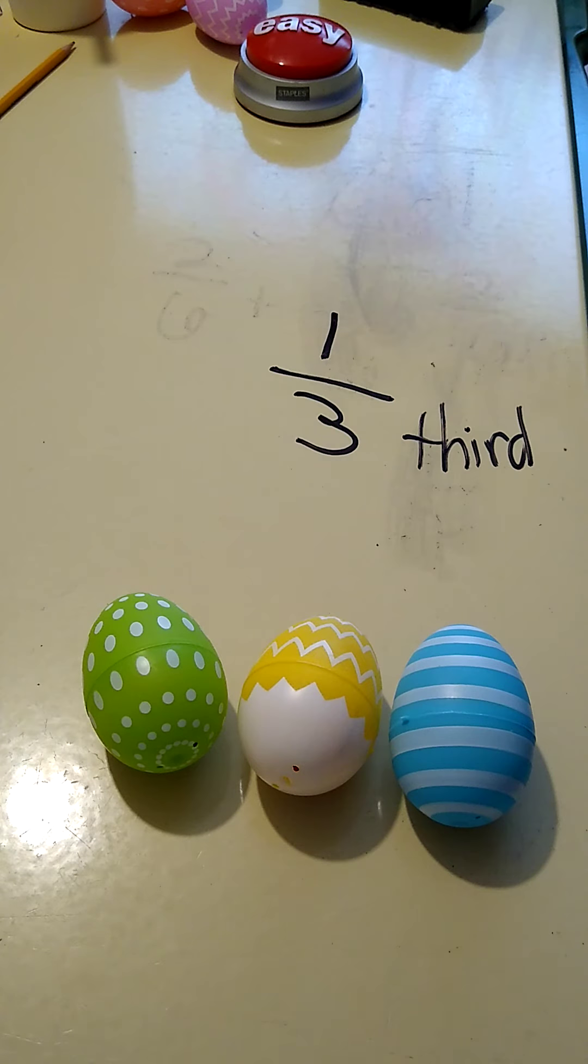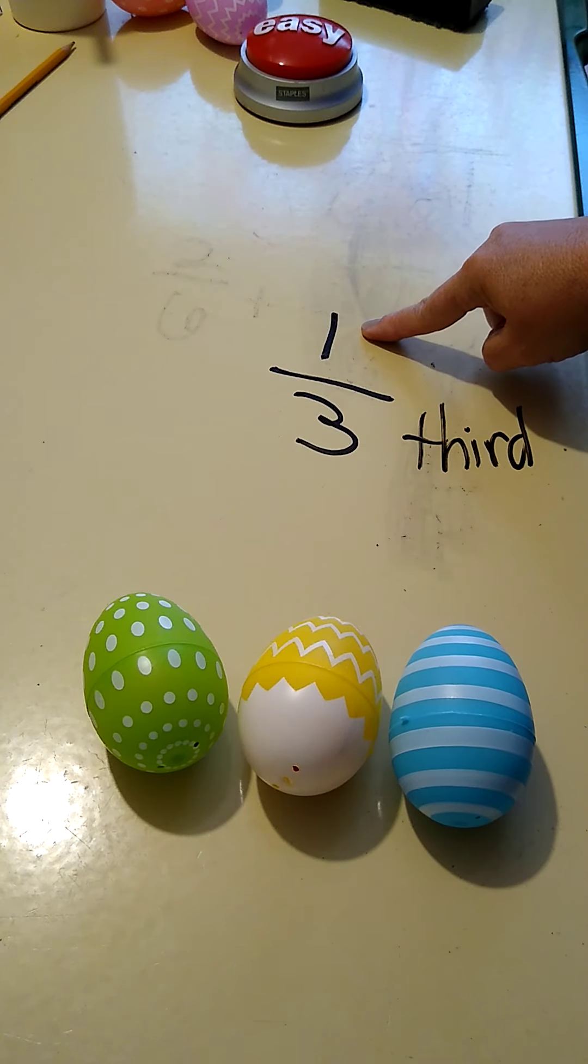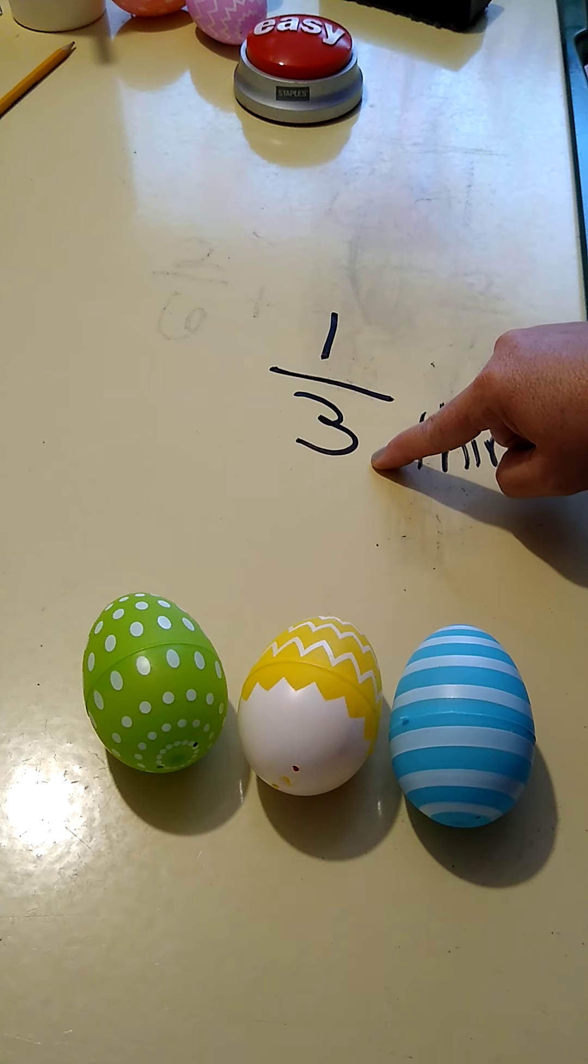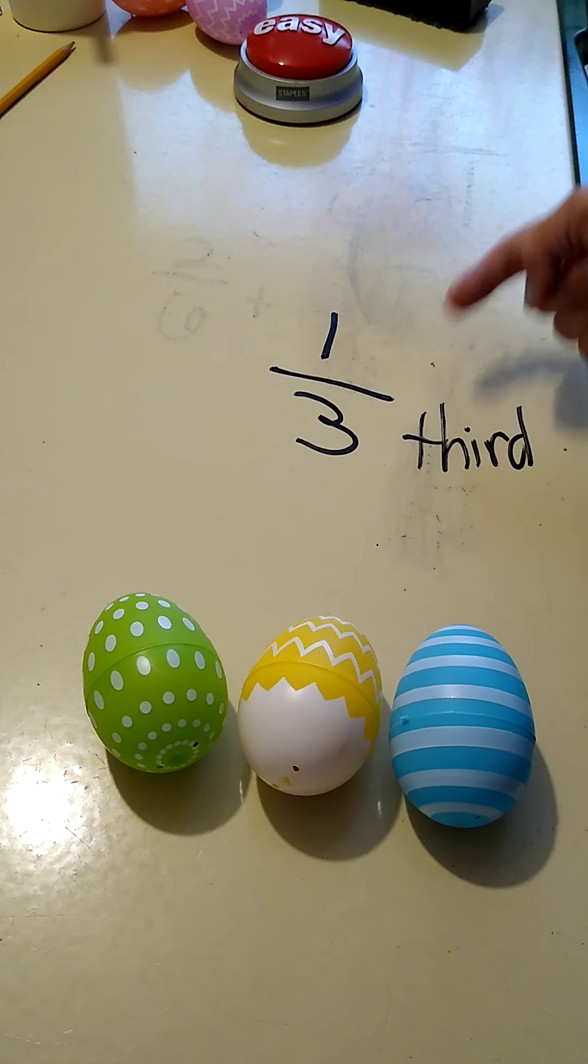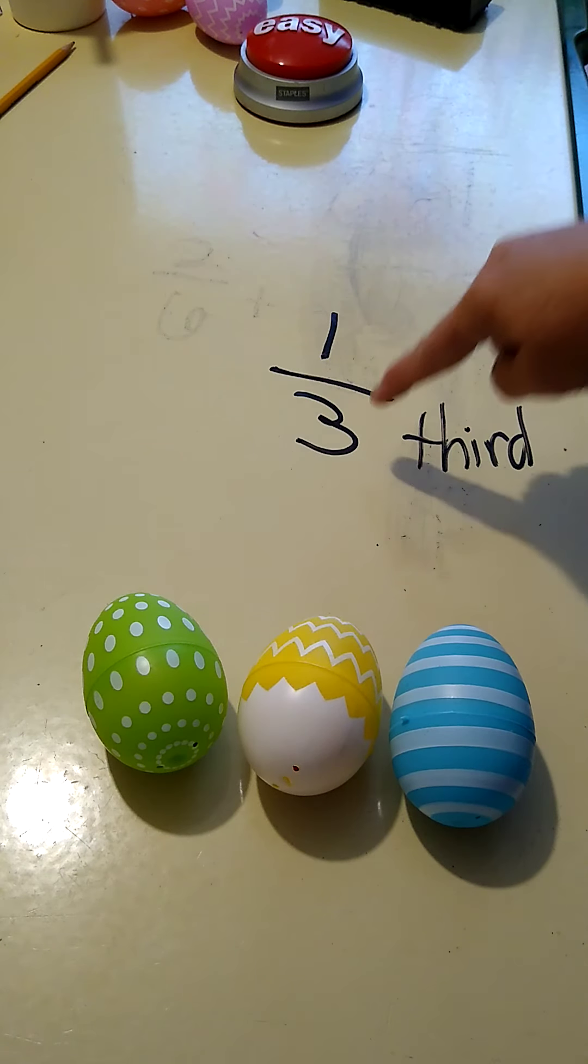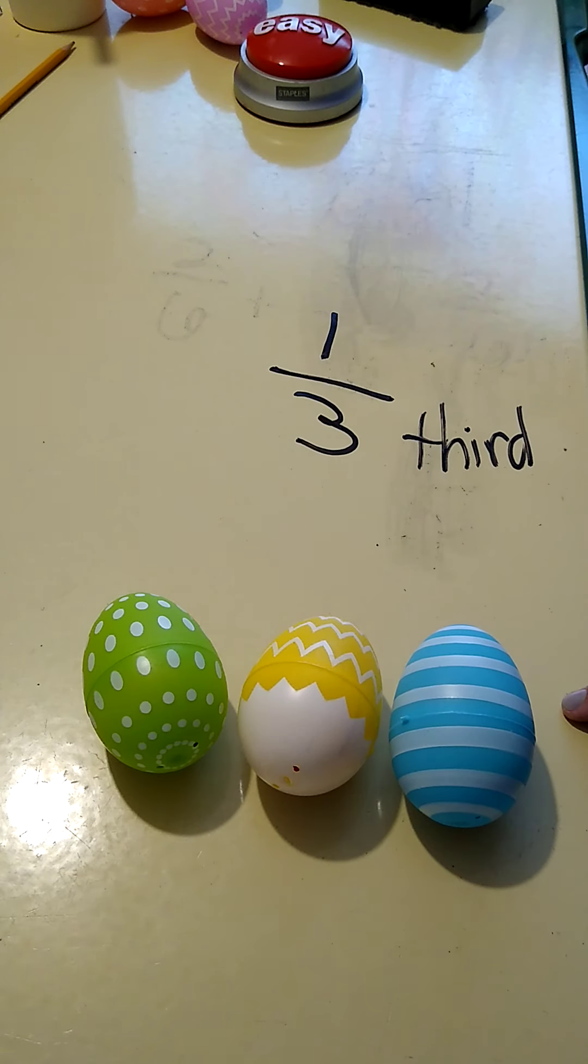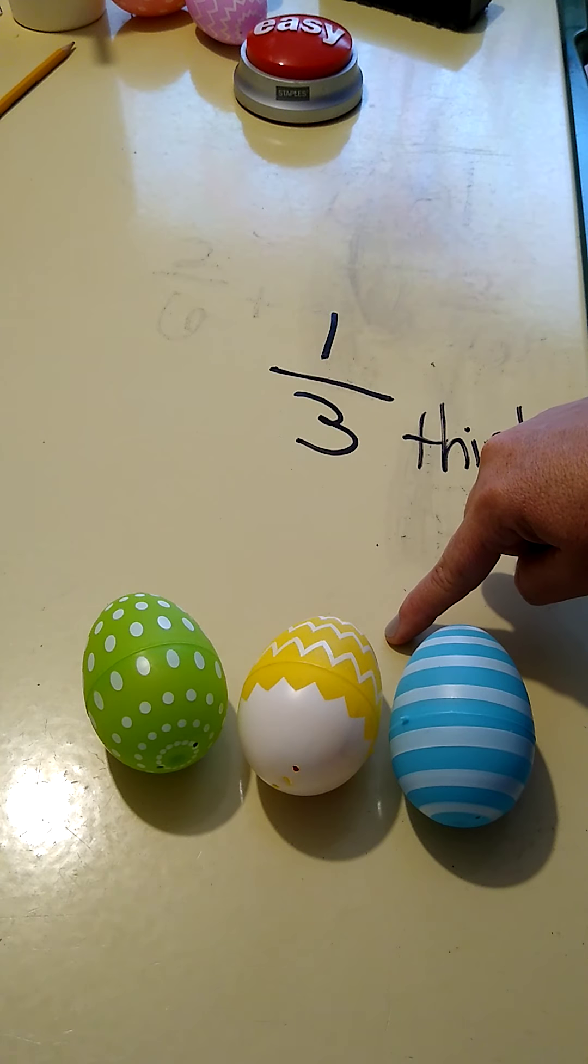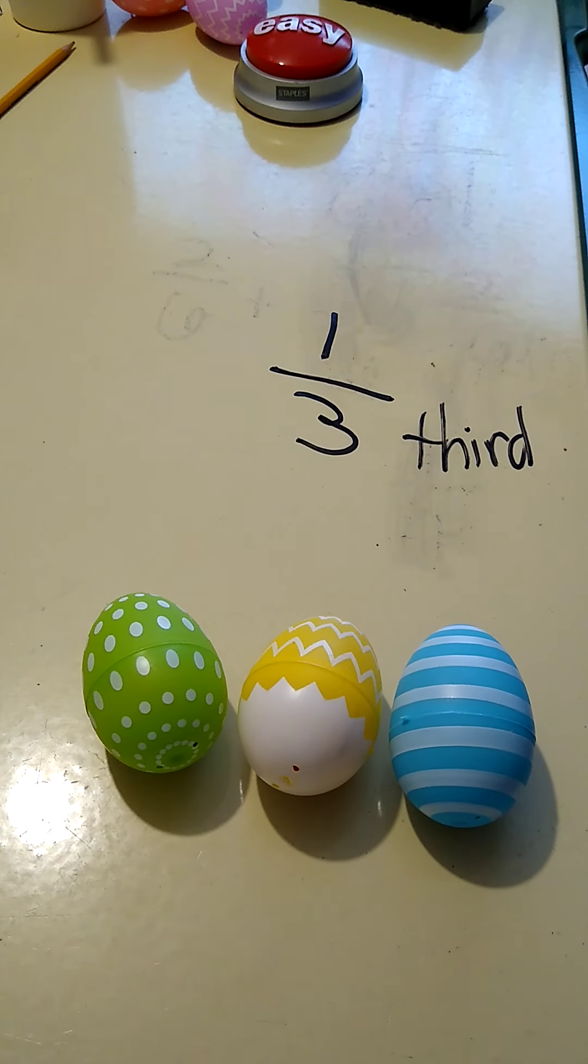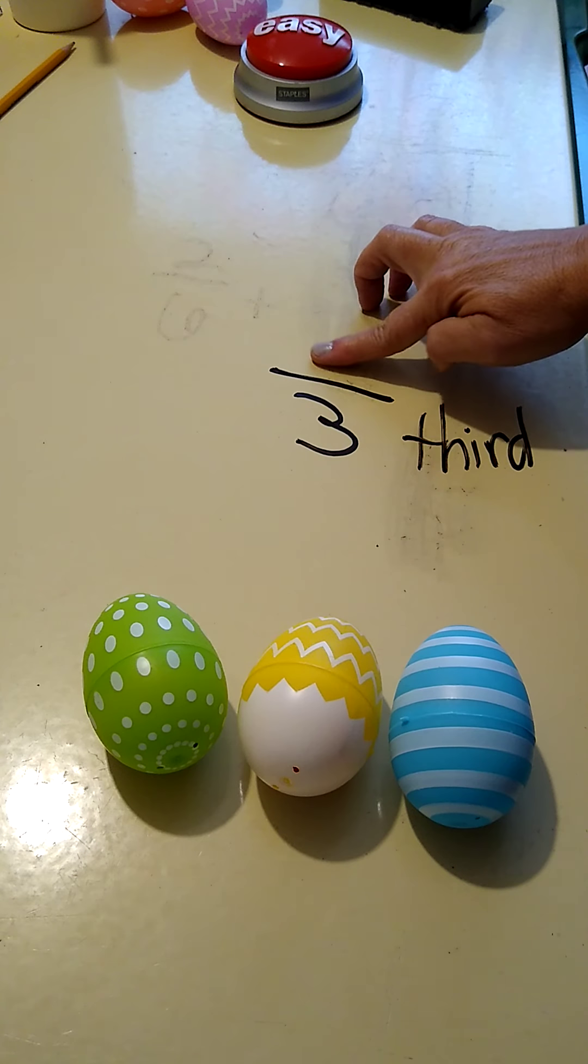When I'm adding fractions together, I only add the numerator, the number on top. Remember the number on the bottom is the denominator. Denominator starts with D and down starts with D, so the number that goes down is the denominator that shows the whole, how many equal parts in the whole.